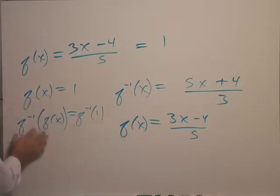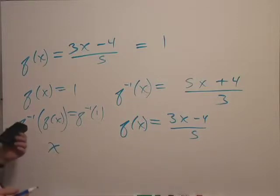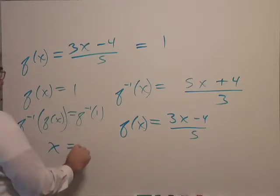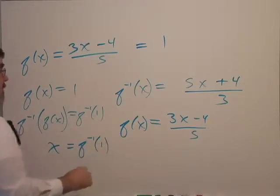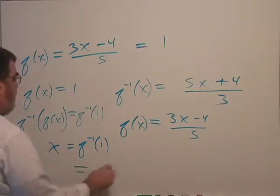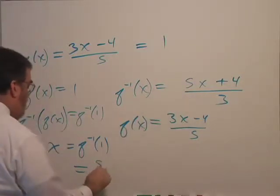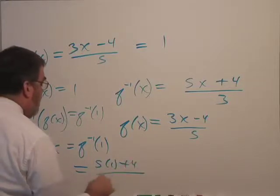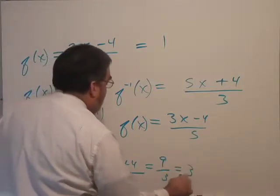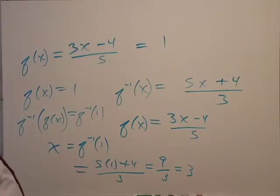When I apply the f inverse function to each side, on the left side, since they're inverses, these cancel and I have solved for x. So the solution to this equation, x would be the inverse function of 1. Let's go through the steps. f inverse would be 5 times 1 plus 4 over 3, and that's 9 over 3 equals 3. That's what we expected. 3 was our answer.